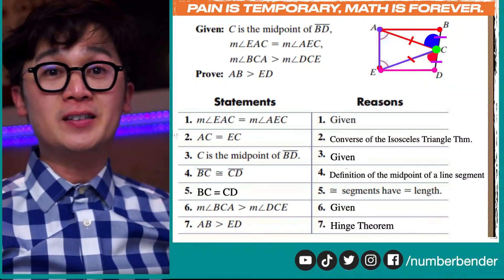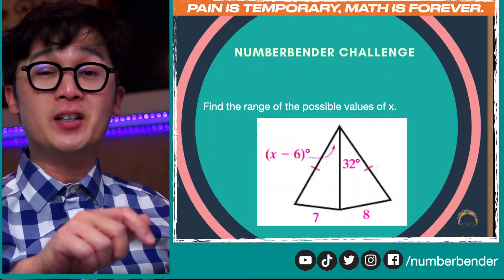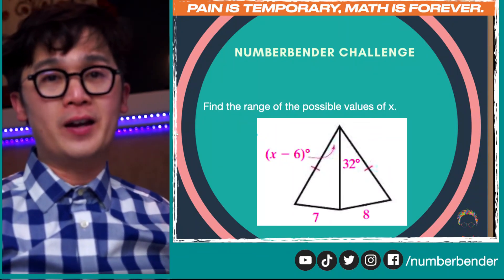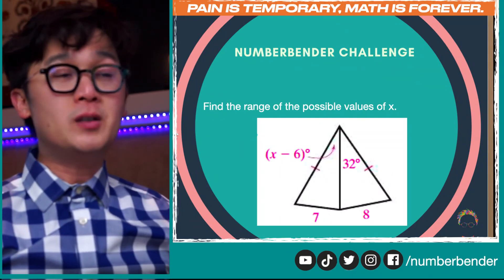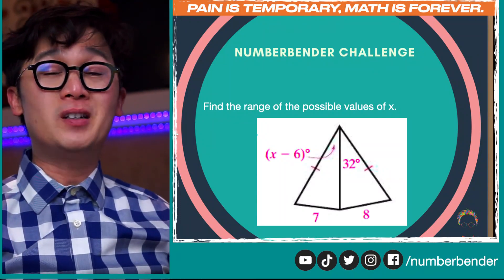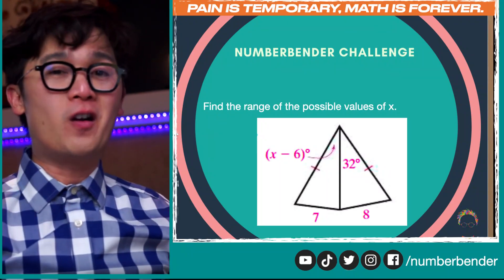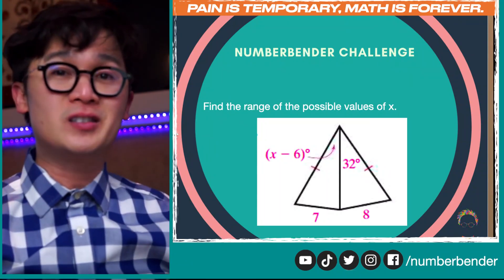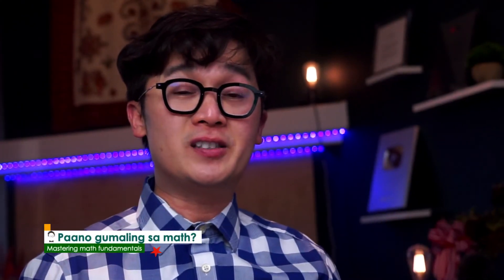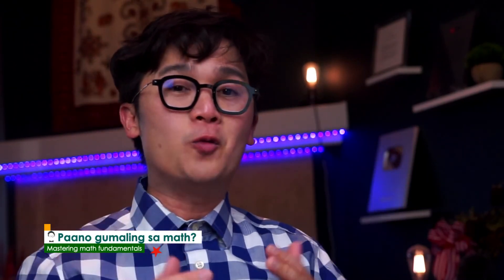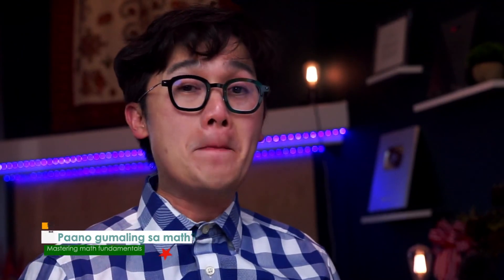Practice is what you will need to gain confidence in writing two-column proofs. For your Number Bender challenge, you're going to be working on algebra and the hinge theorem to find the possible values of x for a given triangle. Use the hinge theorem with a little help from algebra and comment down below the inequalities or intervals needed for the answer. This is our lesson on writing two-column proofs for triangle inequality — this is Dr. E, see you next time, bye!